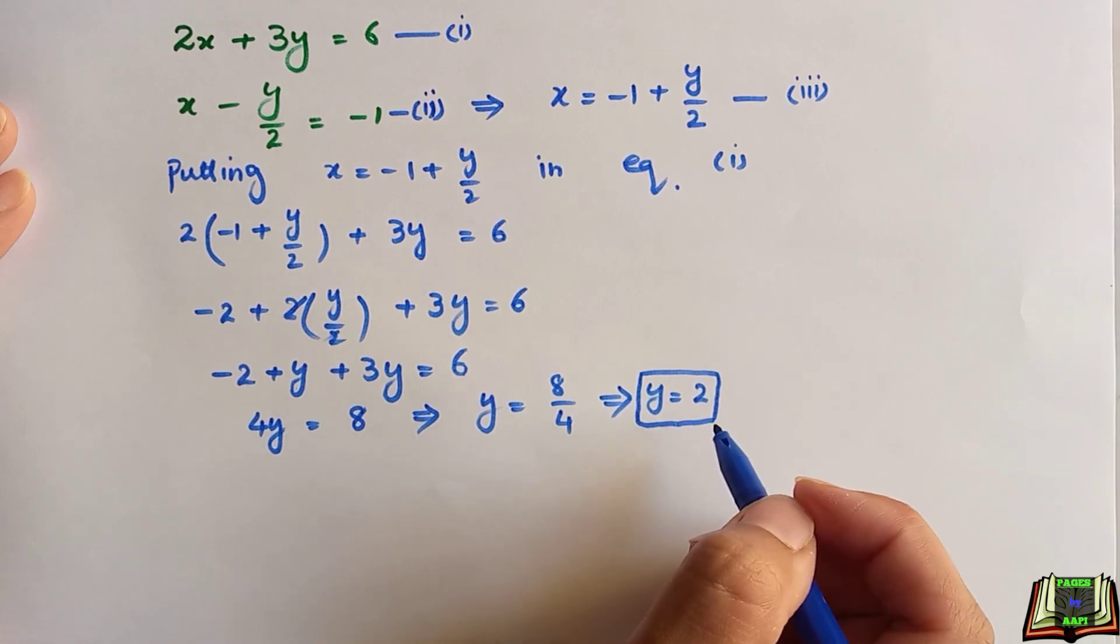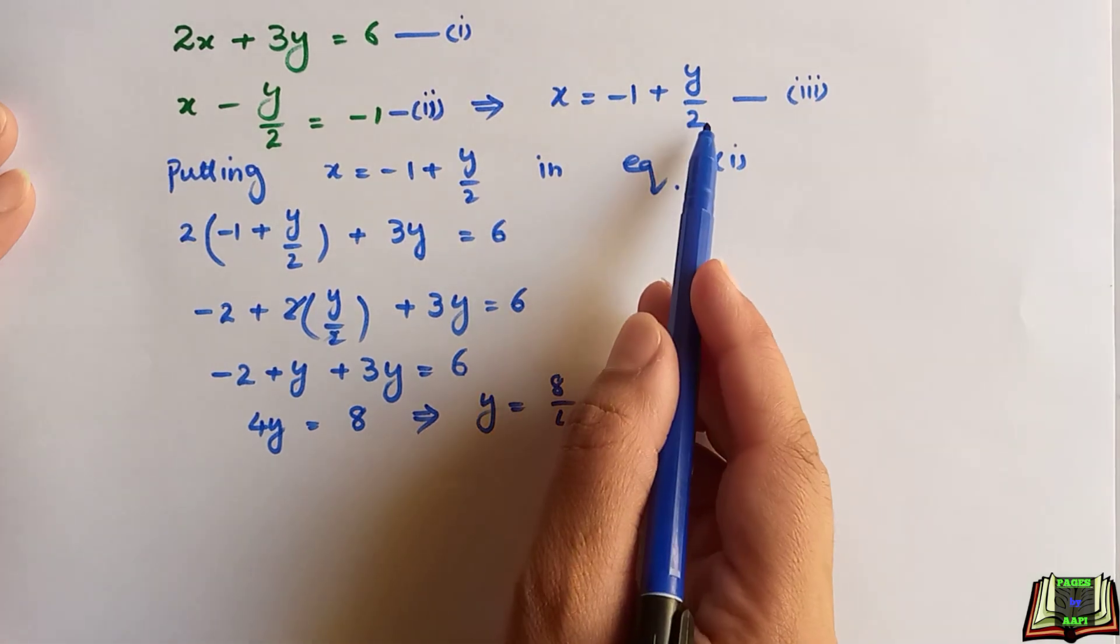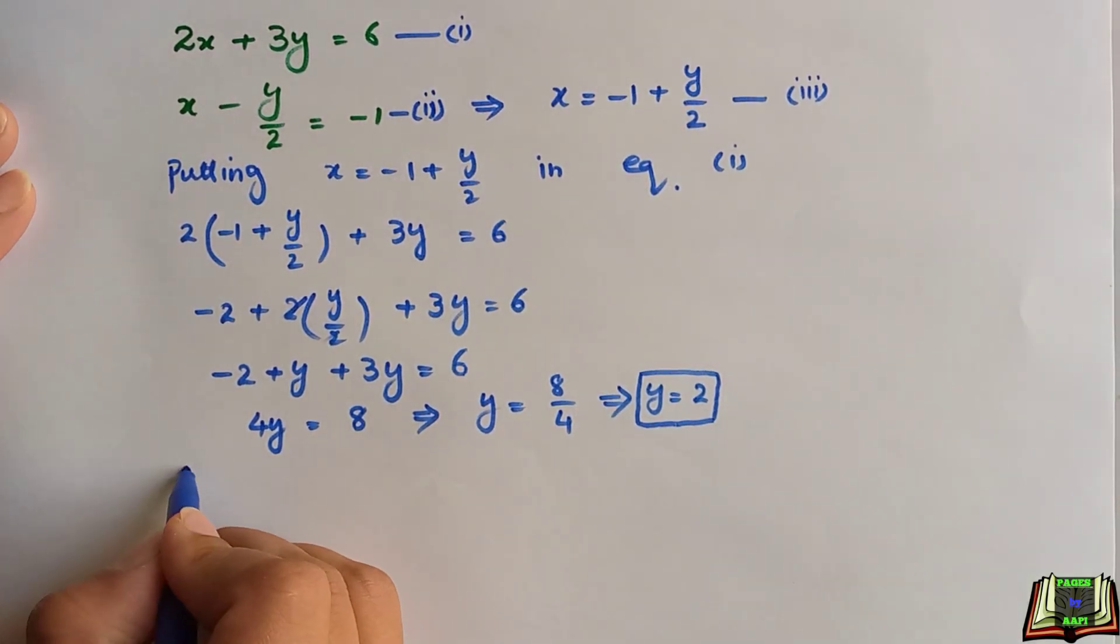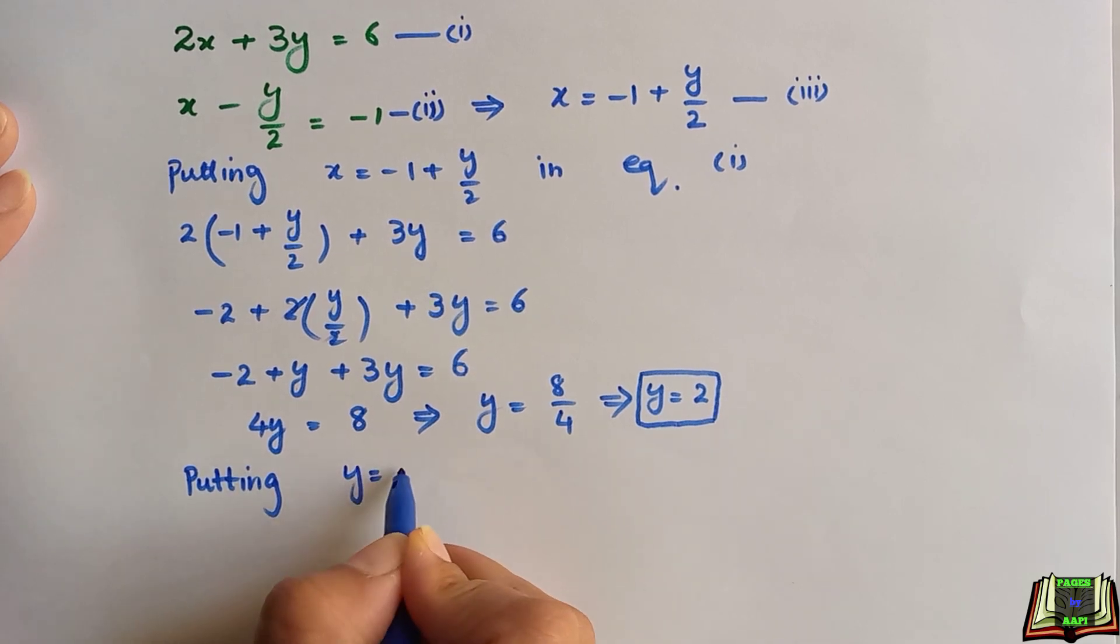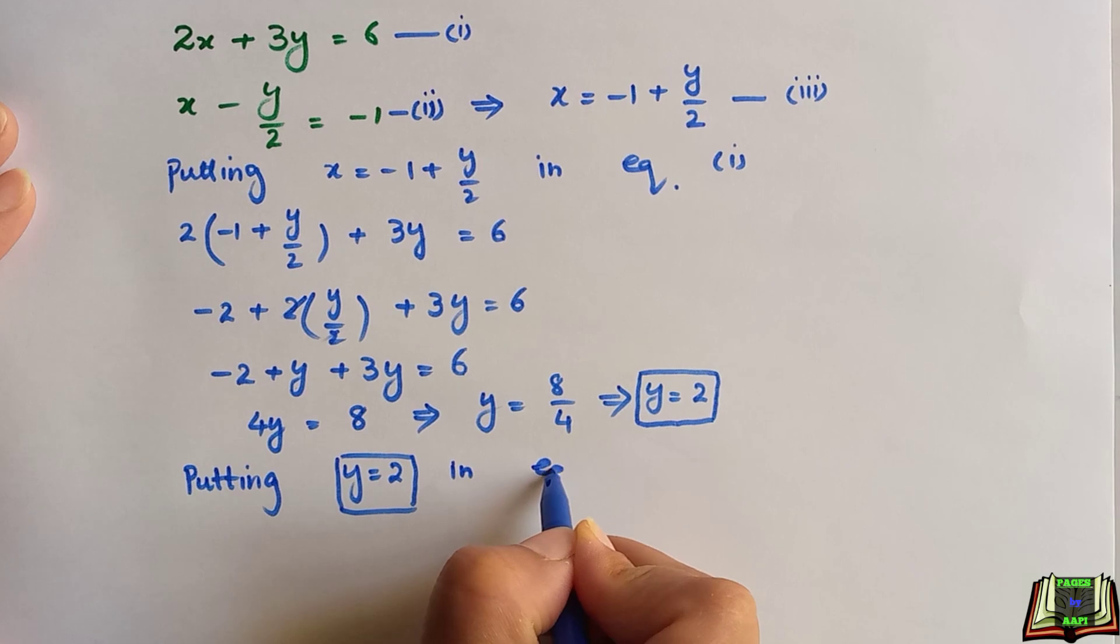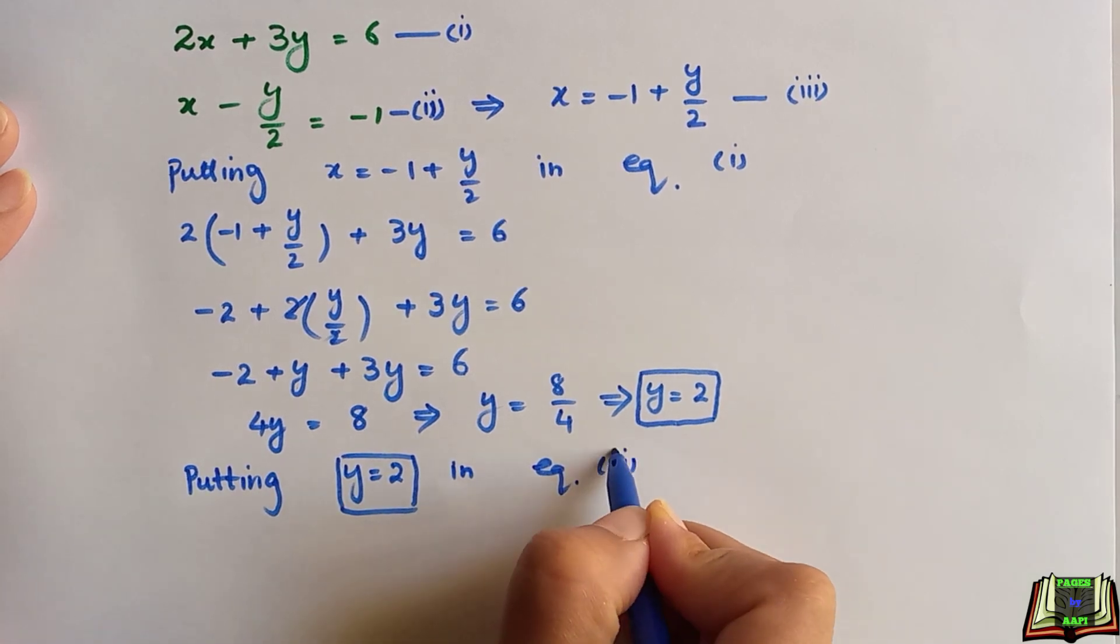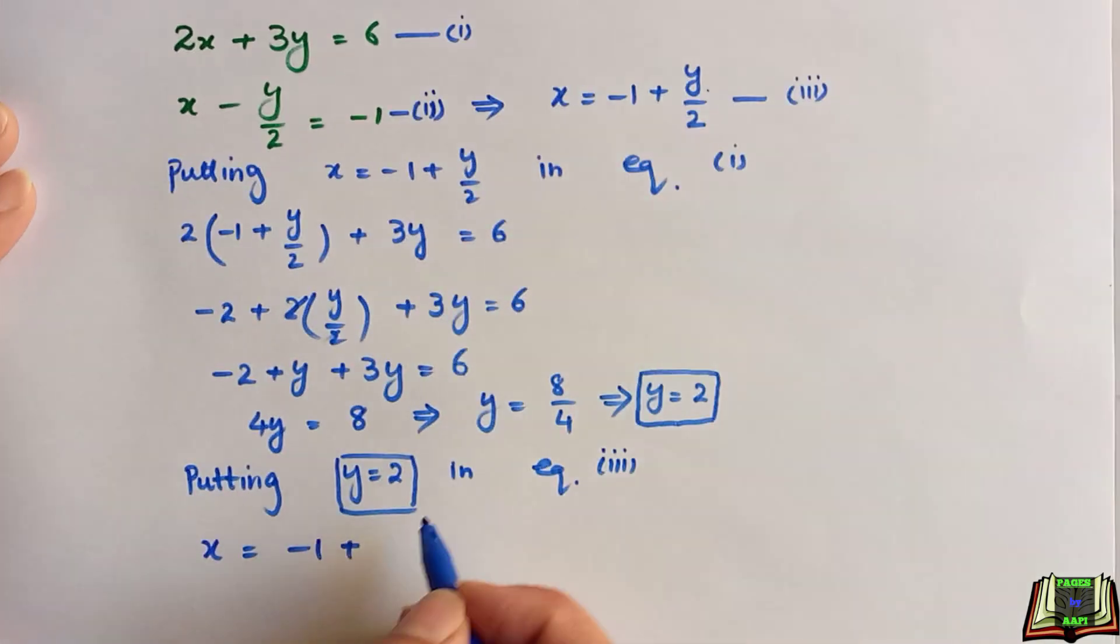Now we will put the value of y = 2 in this equation which we found at the beginning. In the third equation, putting y = 2 in equation 3, we get x = -1 + 2.